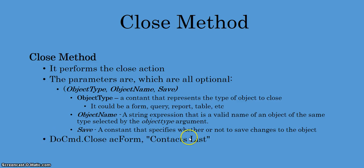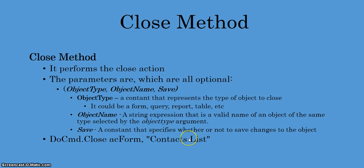Here is an example of what you'll see in the code once we open the database. You type DoCmd.Close — the first parameter here is the object type, which is the constant value acForm. The second parameter is the name of the object, which must match the same type. In this case, I'm passing in a string expression naming the exact form I'm going to close. This form is named exactly as it appears in my database — contacts list.